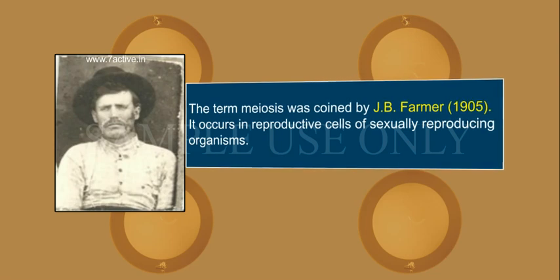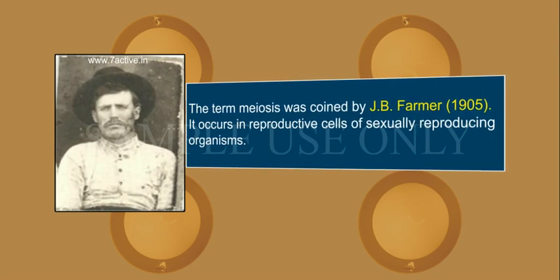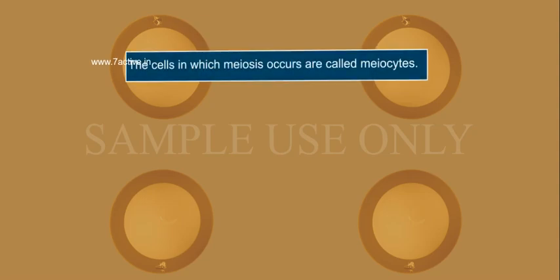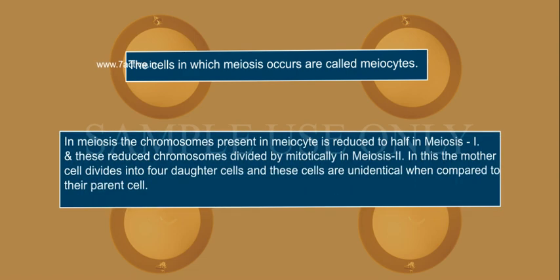Meiosis occurs in reproductive cells of sexually reproducing organisms. The cells in which meiosis occurs are called meocytes. In meiosis, the chromosomes present in the meocyte are reduced to half in meiosis I, and these reduced chromosomes are divided mitotically in meiosis II.